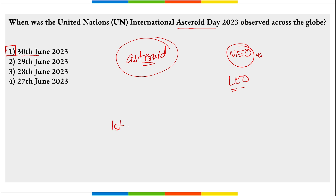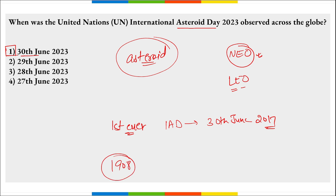The first ever International Asteroid Day was observed on 30th of June 2017. The 30th of June marks the anniversary of Earth's largest recorded asteroid impact — the 1908 Siberia Tunguska event. So International Asteroid Day is observed on 30th of June.